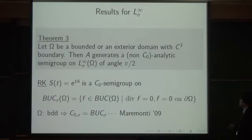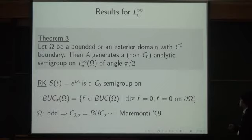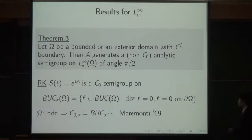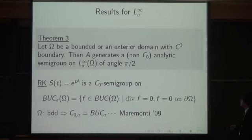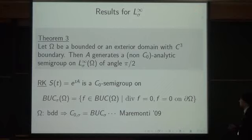We consider the space BUC-sigma: the closed subspace of bounded uniformly continuous functions with divergence zero and zero boundary trace. When the domain is bounded, C0-sigma agrees with BUC-sigma, and it forms a C0-semigroup — first proved by Maremonti. When the domain is an exterior domain, BUC-sigma is strictly greater than C0-sigma, but we are able to prove continuity at time zero.